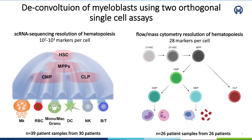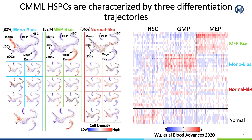We address these questions via single-cell RNA sequencing and high-parameter flow cytometry, using rare CD34 populations from a cohort of 55 patients. We identified three distinct progenitor-biased states in CMML myeloblasts.